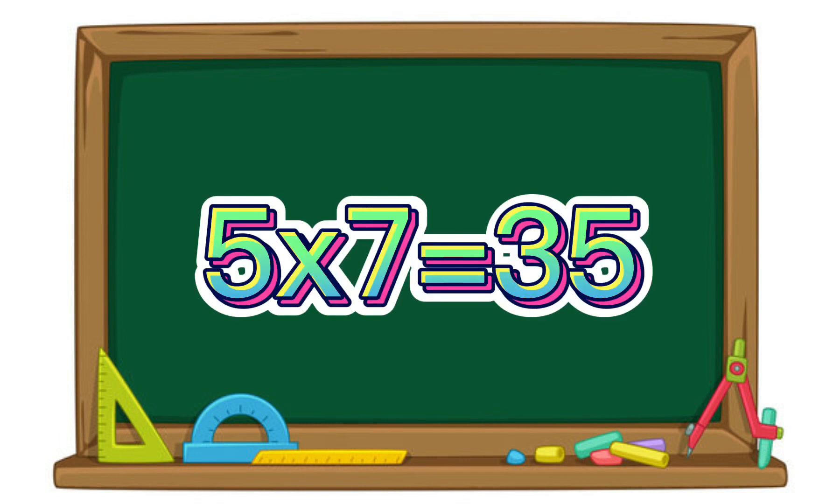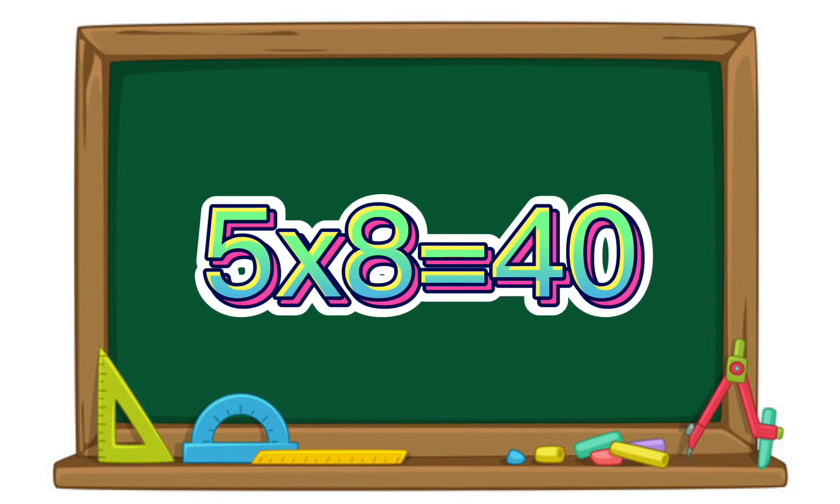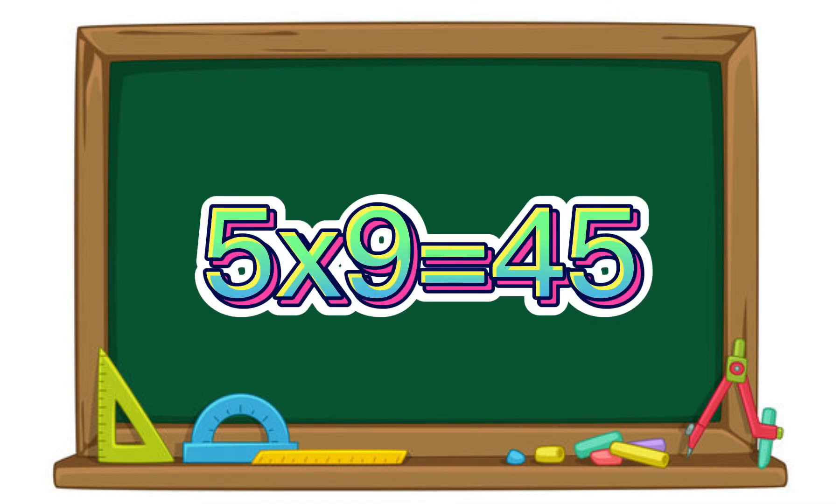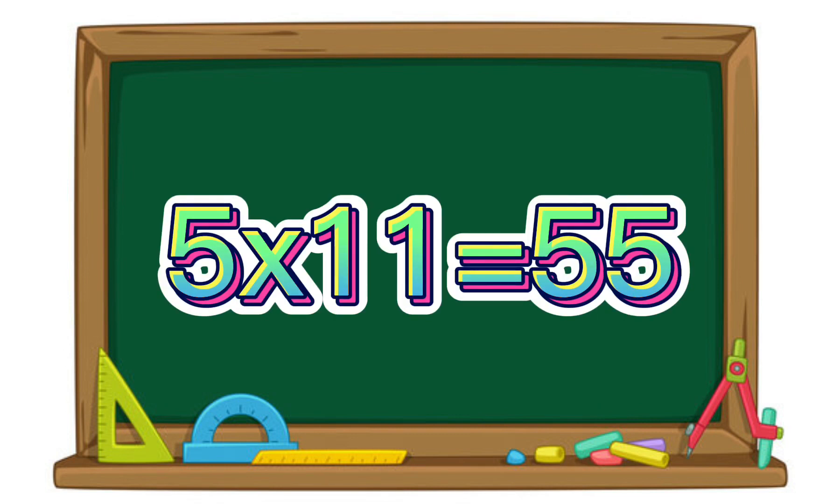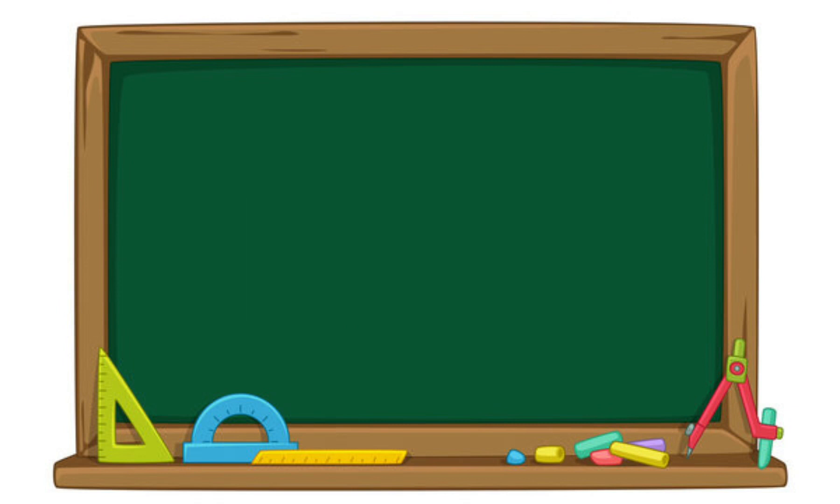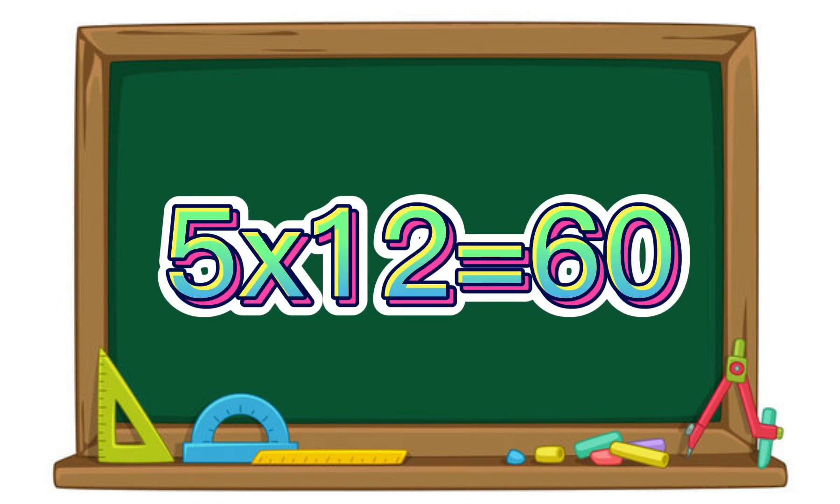5 times 7 equals 35. 5 times 8 equals 40. 5 times 9 equals 45. 5 times 10 equals 50. 5 times 11 equals 55. 5 times 12 equals 60.